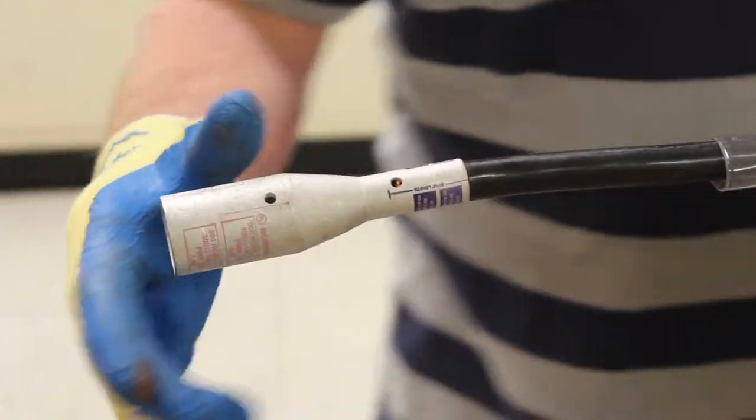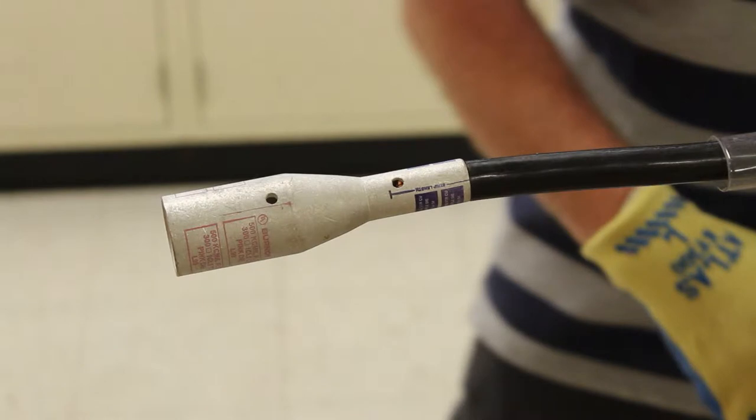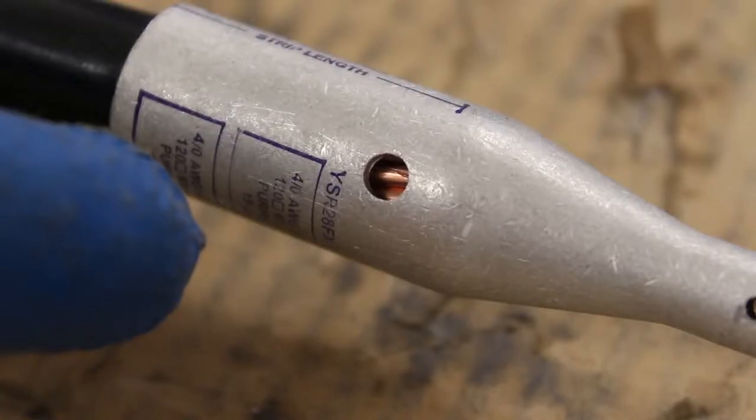Insert the cable into the connector. Make sure that the wire is fully inserted. The cable strands must be visible through the inspection holes.